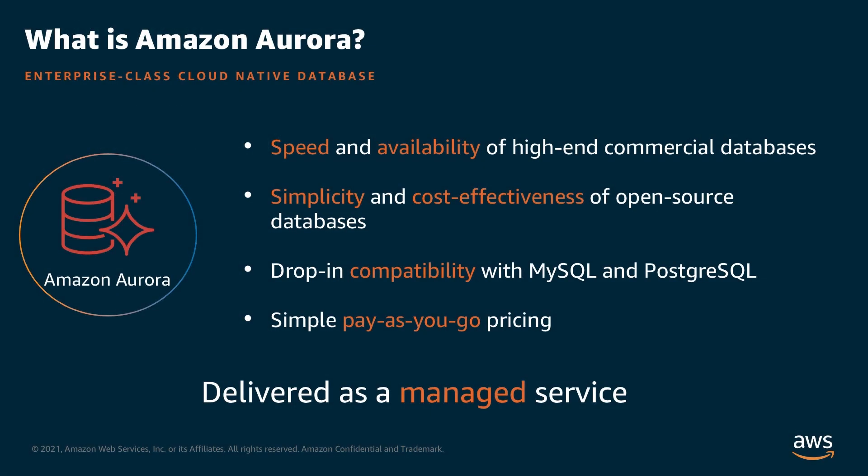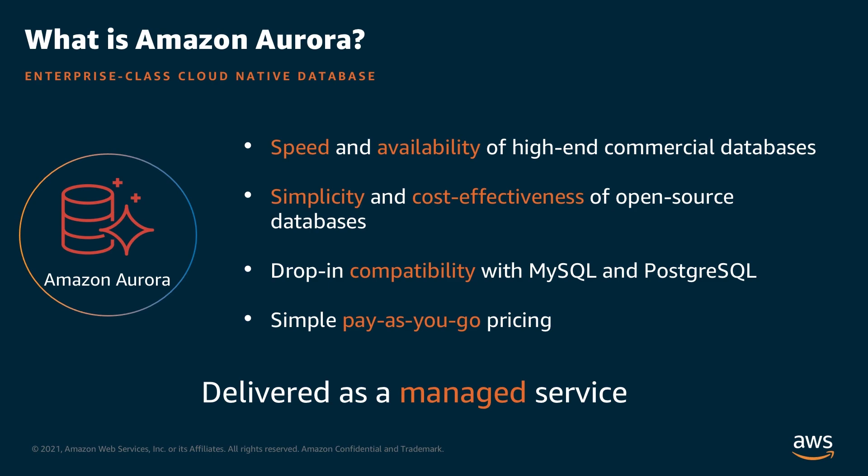First, let's discuss about what is Amazon Aurora. Amazon Aurora is a relational database service that combines the speed and availability of high-end commercial databases with the simplicity and cost effectiveness of open source databases, and is delivered as a managed service.